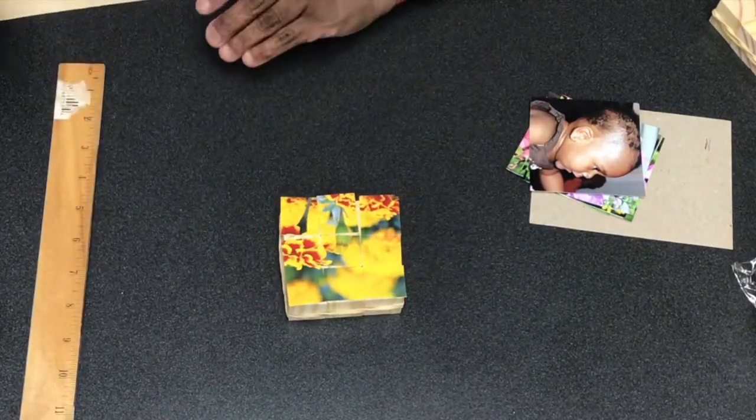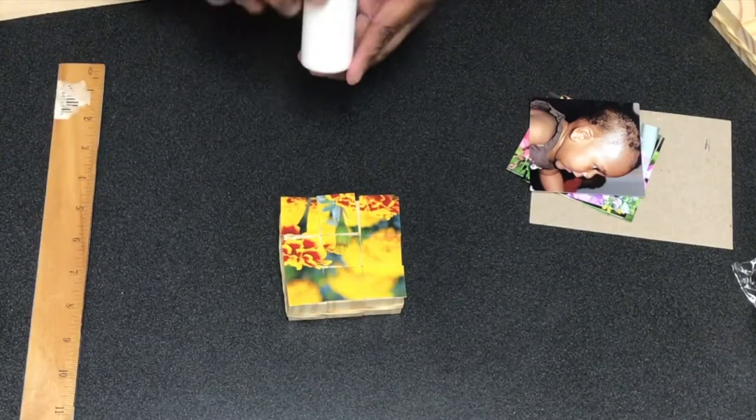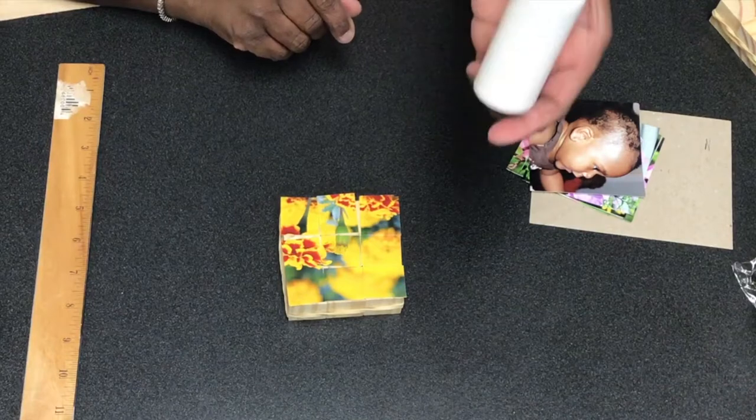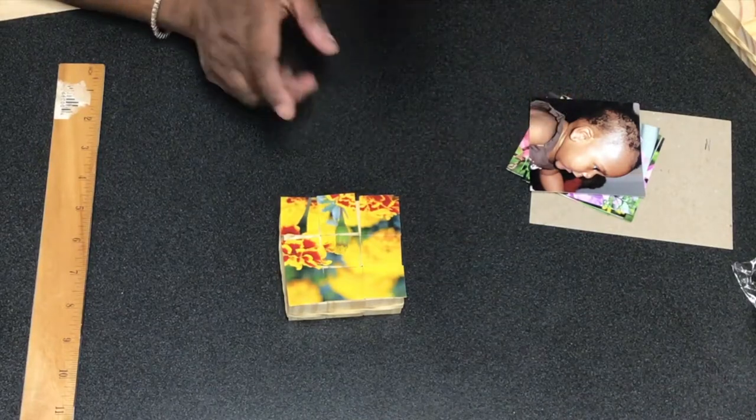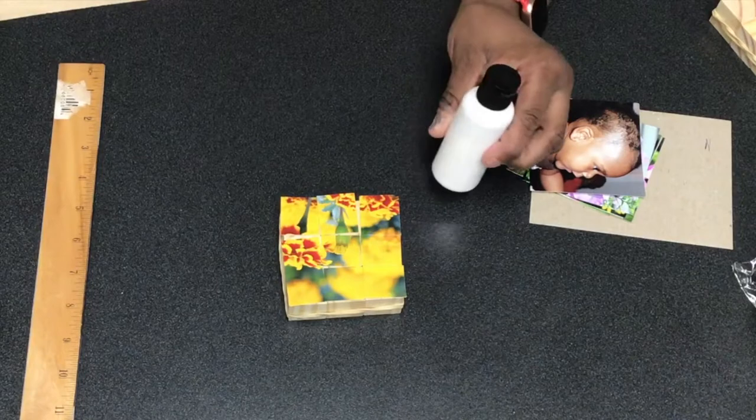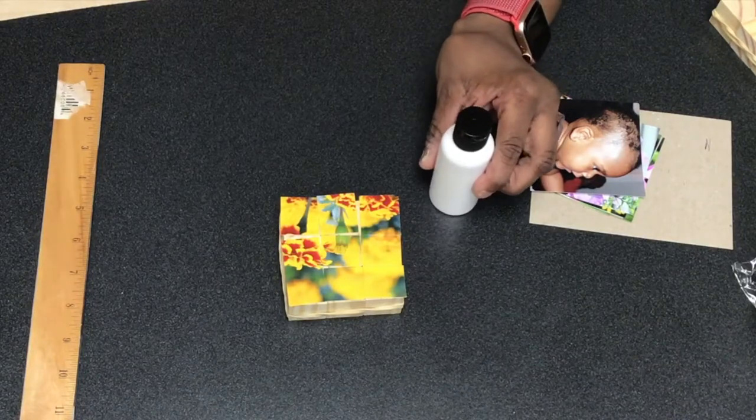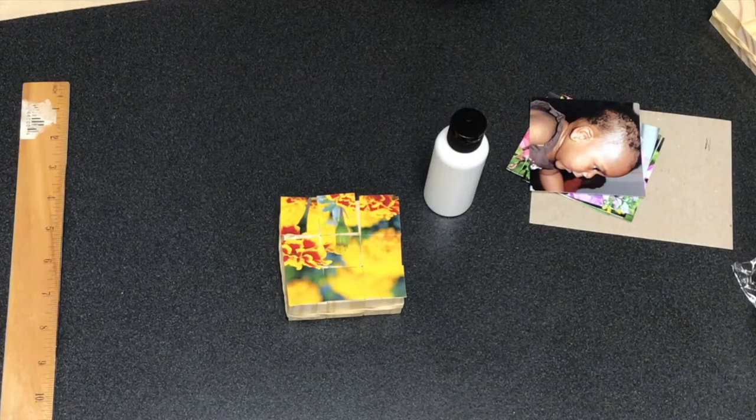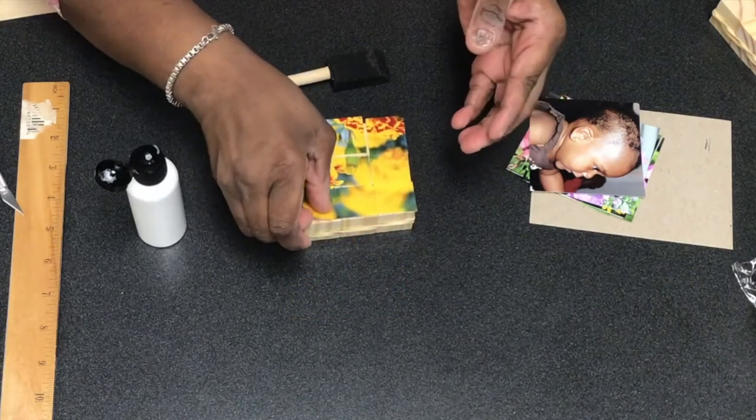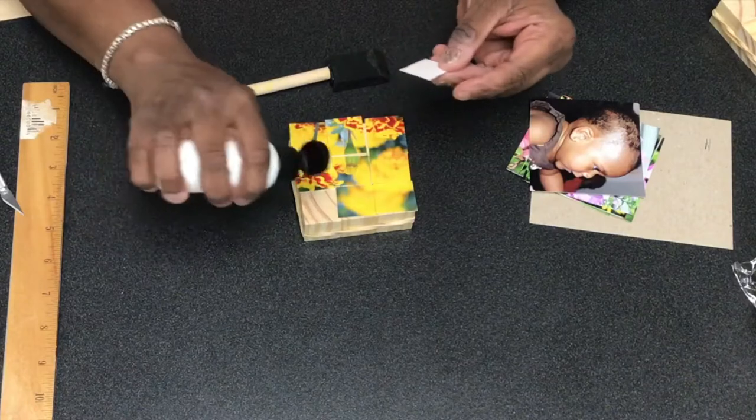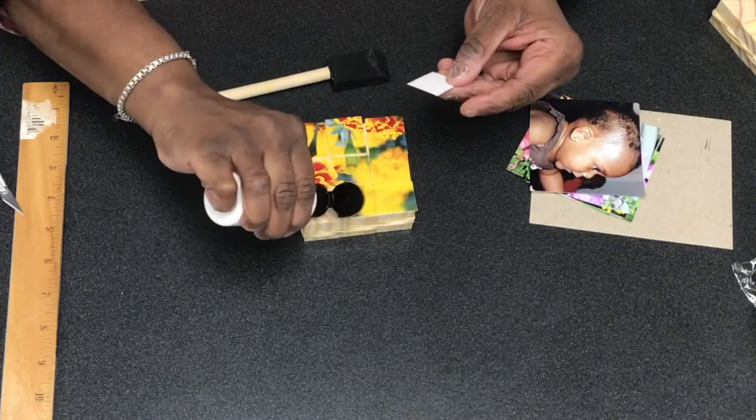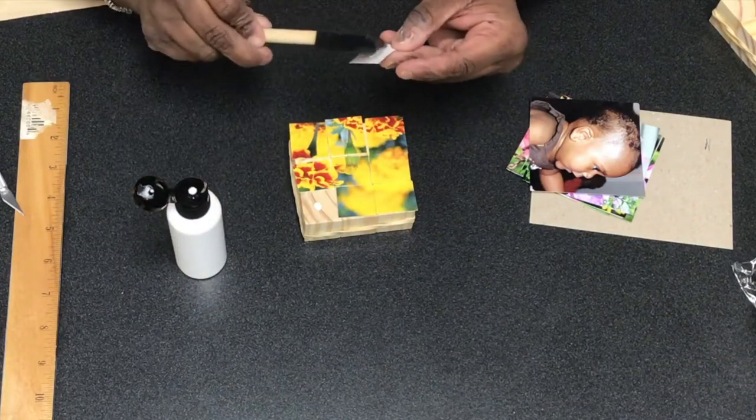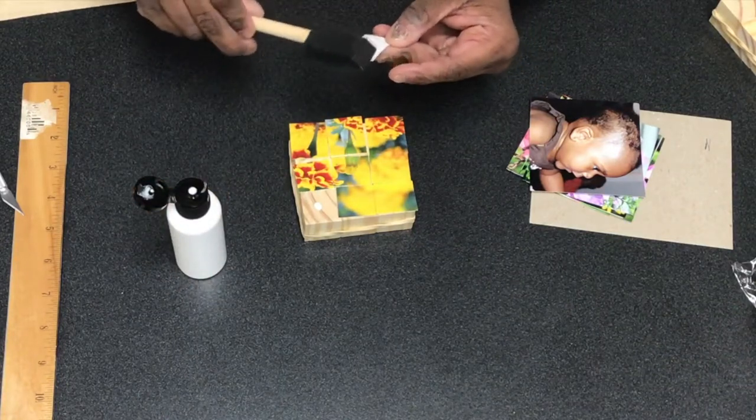The next step is to use your Modge Podge. Each kit comes with a little bottle of Modge Podge. This is enough to do this kit and then more if you want to buy more blocks later. For starters we're going to put a little dab on the back of each block and a little dab on the back of here just to glue it in place.